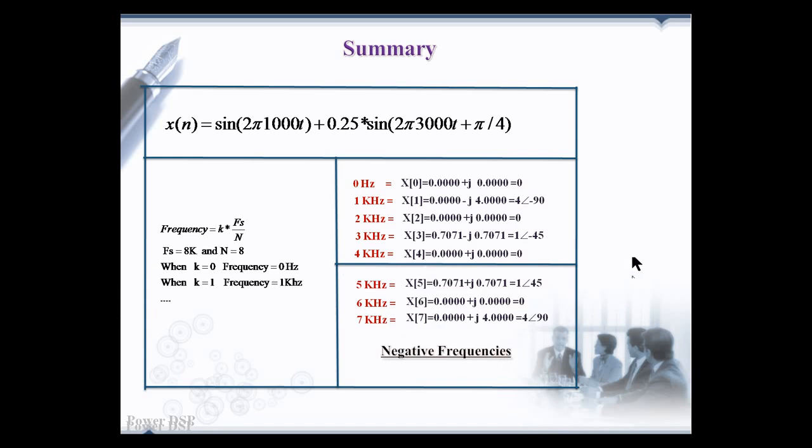Moreover, we can see the amplitudes that are amplified by 4 times. 1 kHz sine wave amplitude is 1 but in the output it is 4. Similarly, 3 kHz sine wave amplitude 0.25 is equal to 1 in the output. Why it is amplified 4 times?